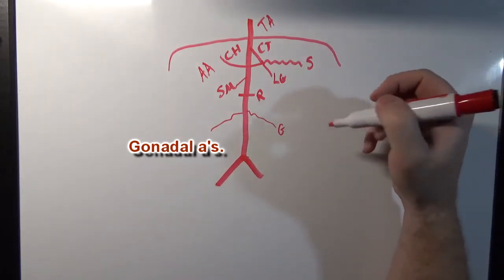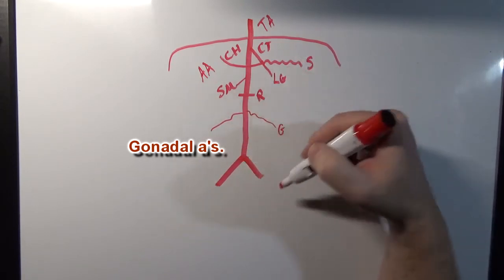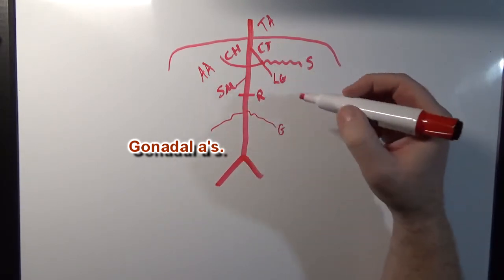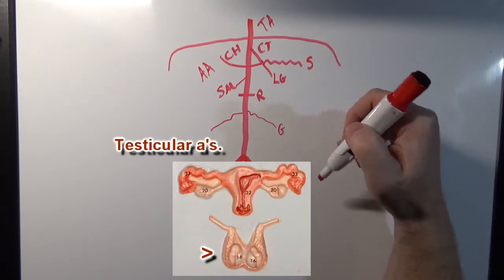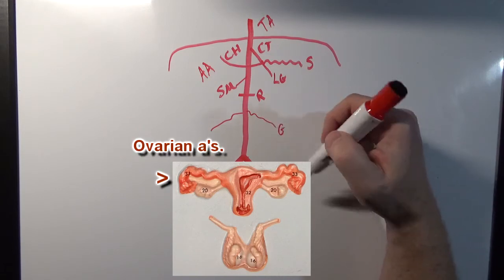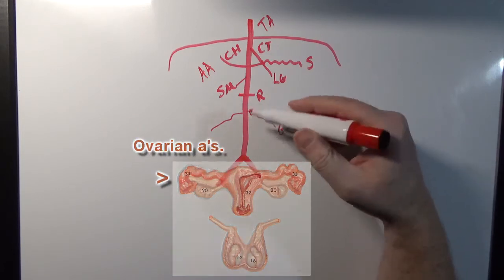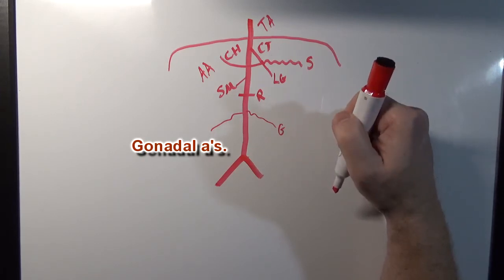I'm going to call those the gonadal arteries since we don't know the sex of the subject we're dealing with. If we were dealing with a male, these would be testicular arteries. If we were dealing with a female, these would be ovarian arteries. But since we don't know, I'm just going to use the generic term. I'm going to use the gonadal arteries for this.